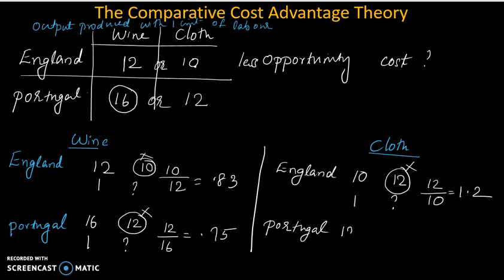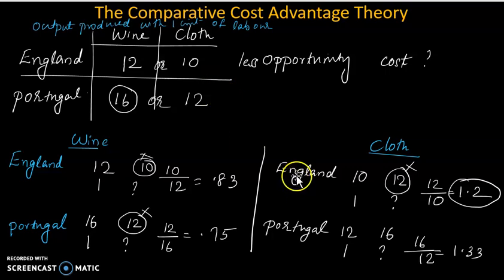In Portugal, the price of cloth is 16 units of wine production. So 1 unit of cloth equals 16 divided by 12, which is 1.33. Less value is 1.2, so England has less opportunity cost in cloth.